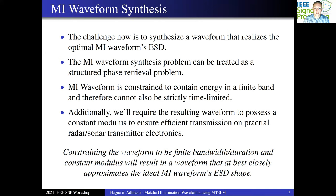We're going to impose a couple of extra constraints in our problem. The waveform is going to have a finite bandwidth, and we're also going to have a finite duration. We technically can't have perfectly band-limited time-limited waveforms. Additionally, we're also going to require that the resulting waveform has a constant modulus, which will ensure efficient transmission on practical radar and sonar transmitter electronics. When we combine these constraints, we'll likely result in a waveform that can't quite ideally match up to the MI waveform's ESD shape, but rather be an approximation. The question is, what's the waveform model should we use that will provide that approximation and meet all these other design constraints?